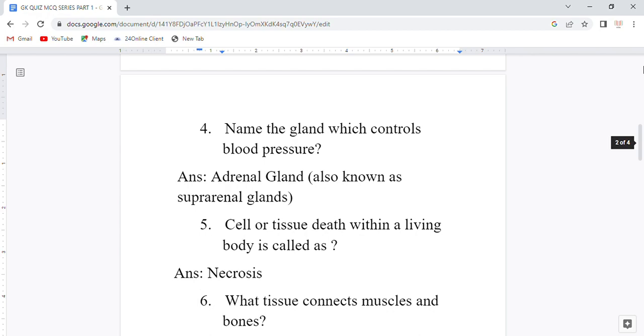Fourth question: Name the gland which controls blood pressure. Answer is adrenal gland, also called suprarenal glands.